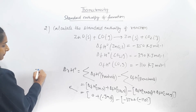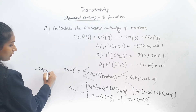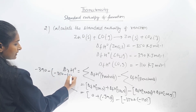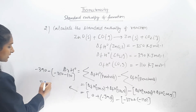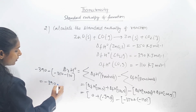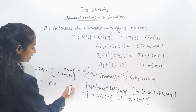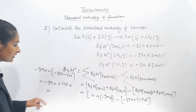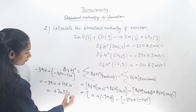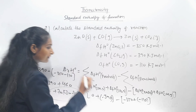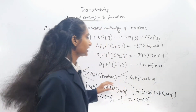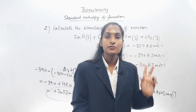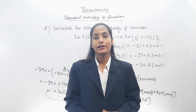Solving: minus 390 minus (minus 350 + minus 110) gives minus 390 minus (minus 460), which equals minus 390 plus 460 equals plus 70 kilojoule per mole. So the standard enthalpy of reaction is 70 kJ per mole. Students, we have calculated the standard enthalpy of reaction — if numericals come, do try them.